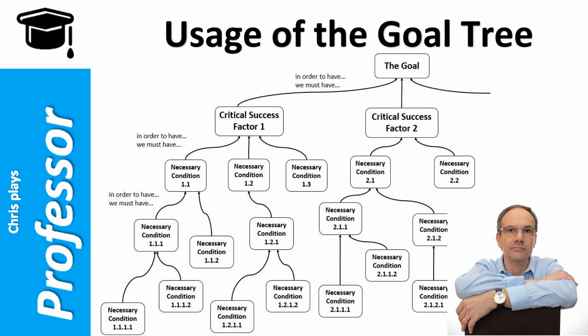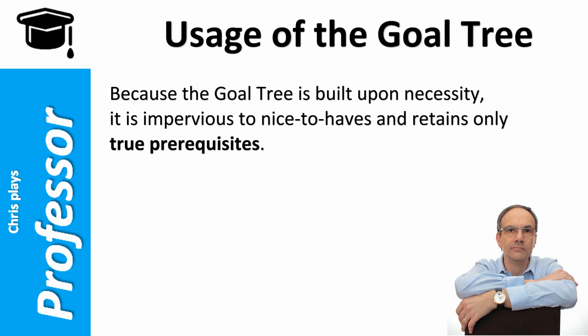The goal tree is built from the goal down to the desired level of necessary conditions with rational analysis. It is not a brainstorming exercise, but the logical analysis of what is required to achieve the succession of intermediate objectives. Because the goal tree is built upon necessity, it is impervious to nice-to-haves and retains only true prerequisites.